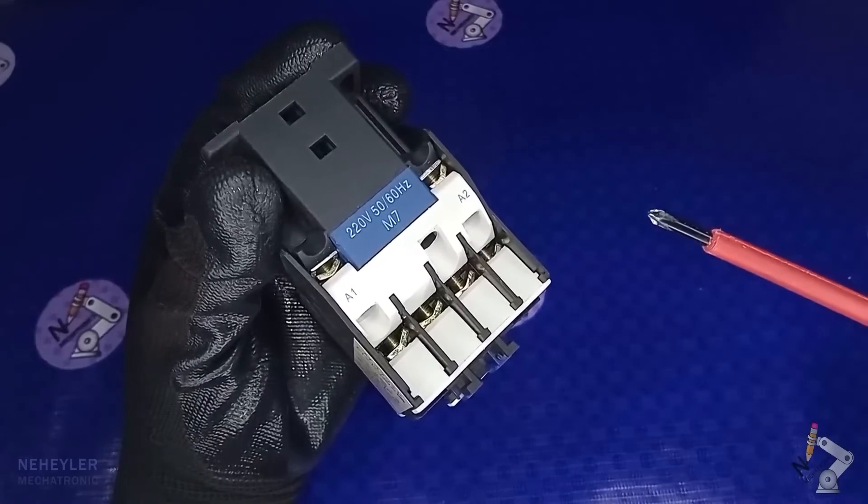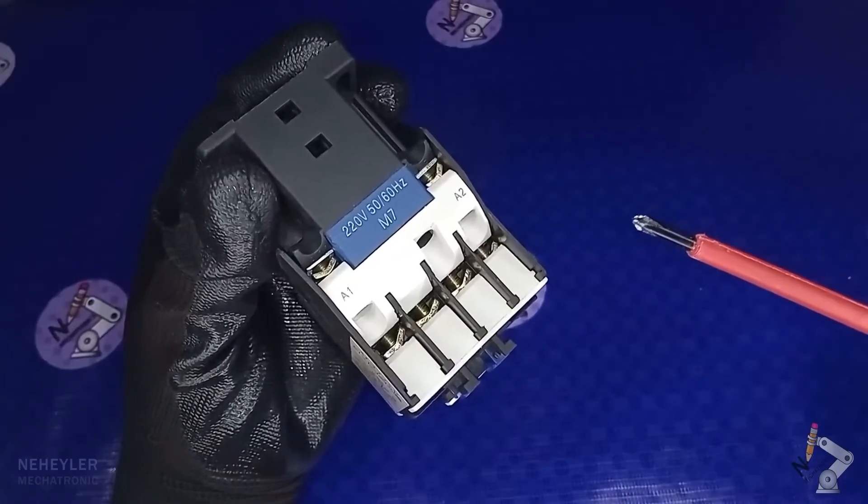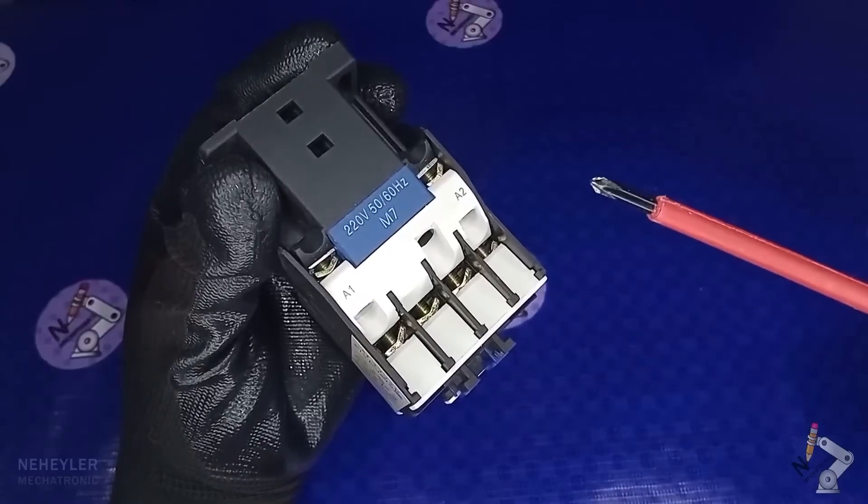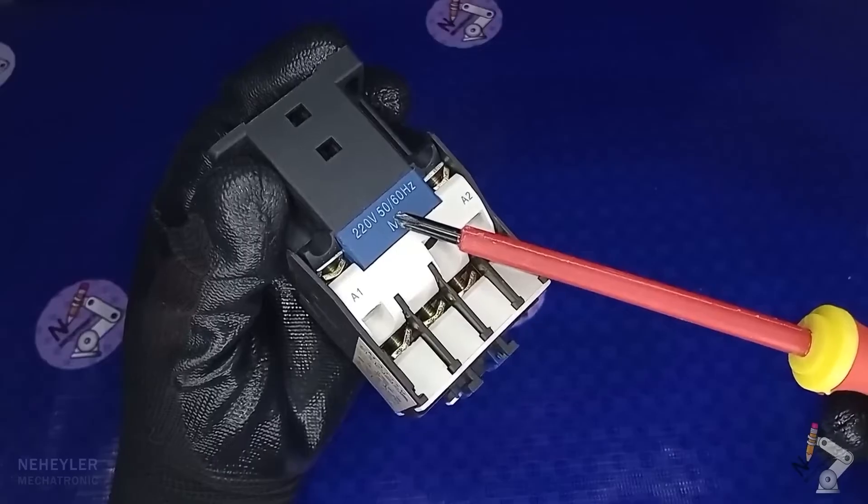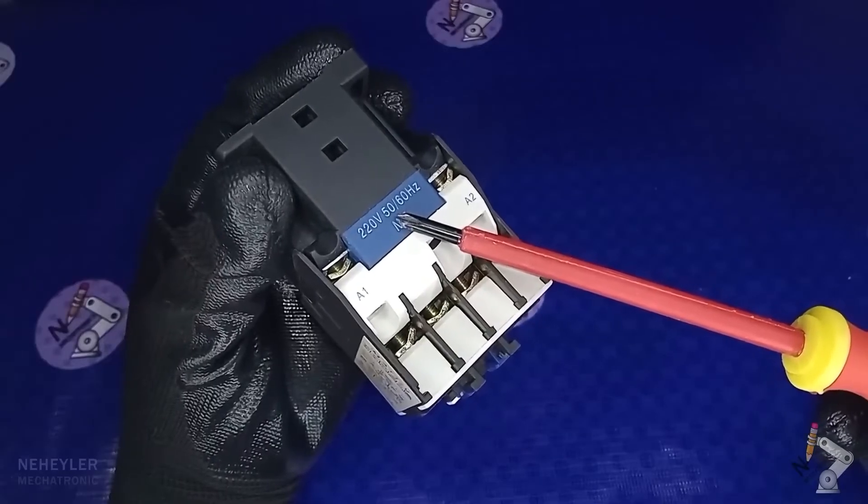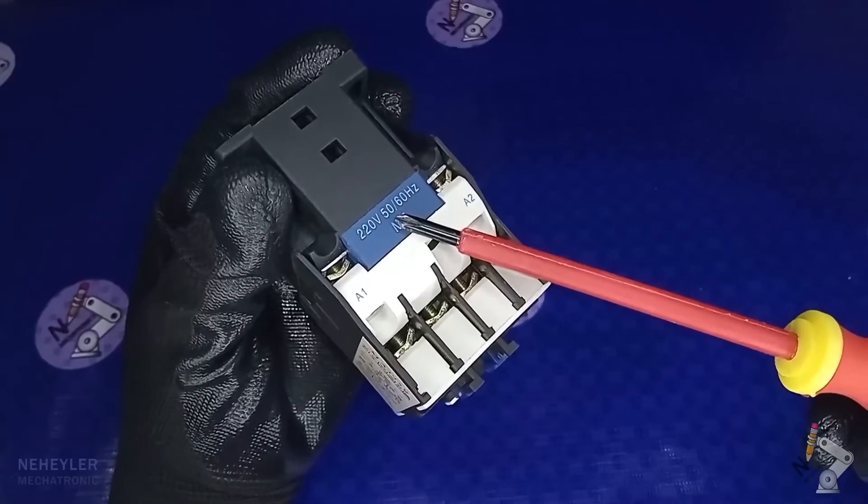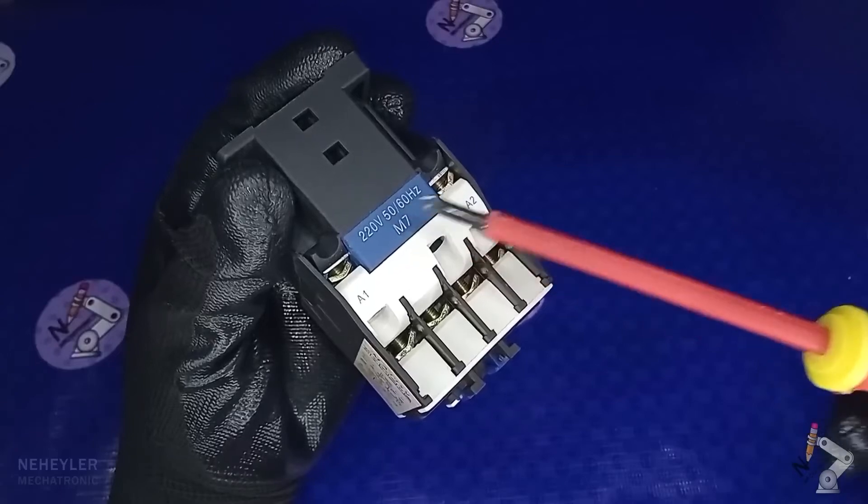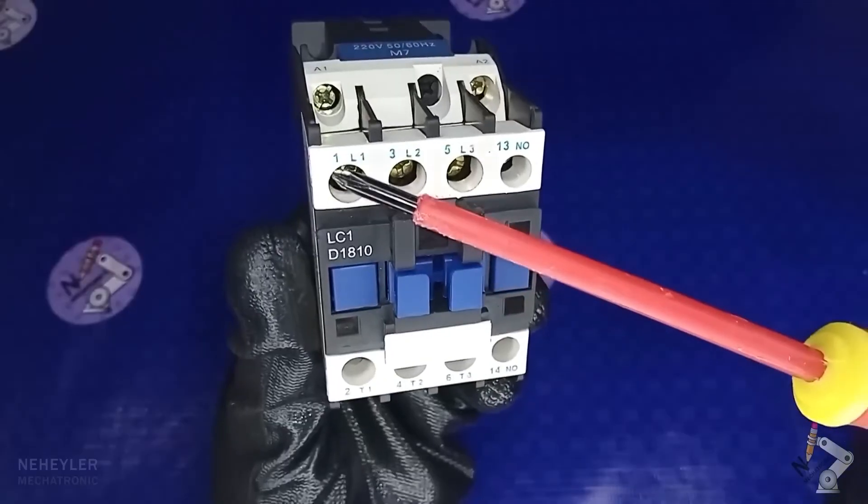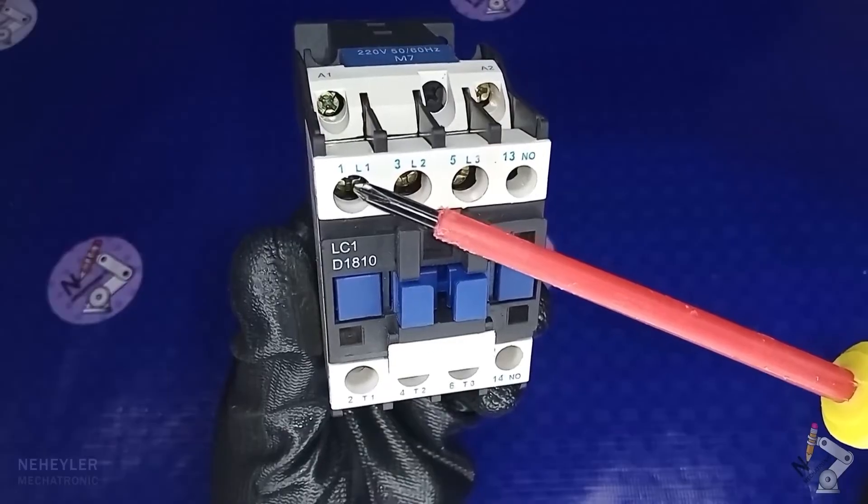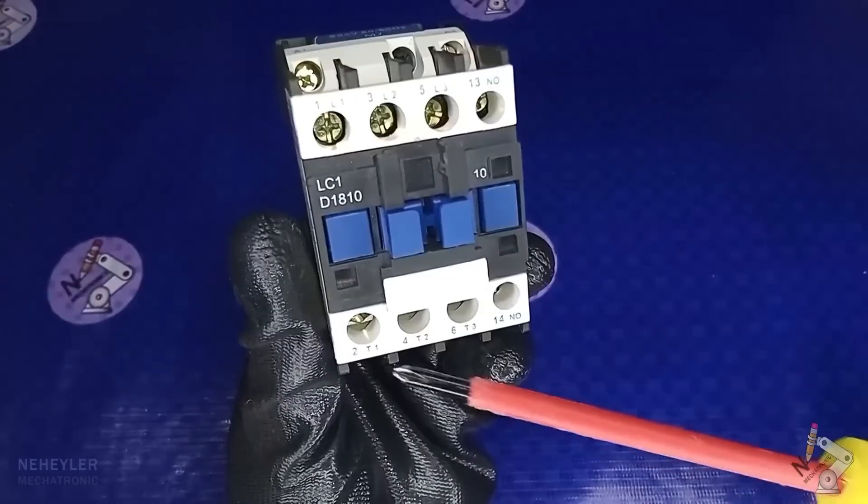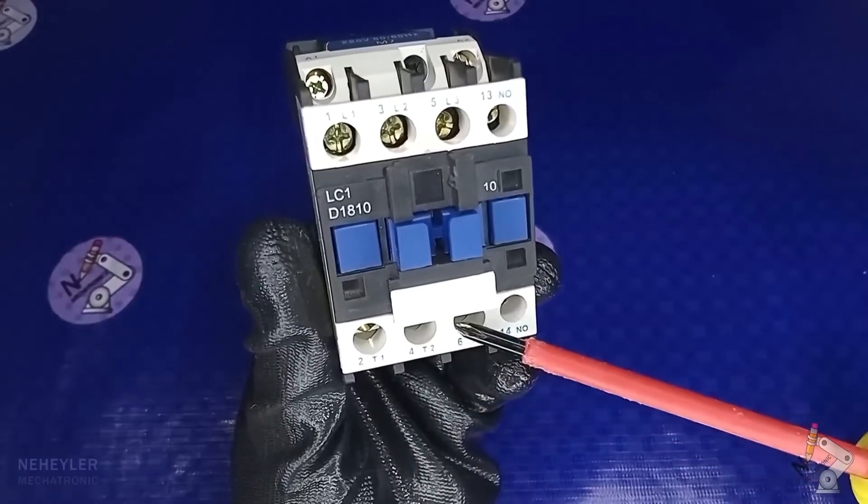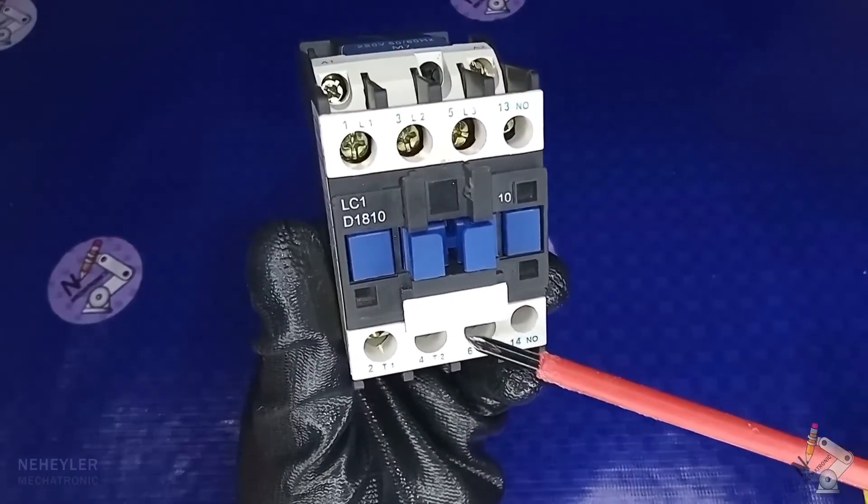That is, between A1 and A2 it must be connected to 220 volts alternating current. In other cases, the coil is powered with 24 volts, 110 volts or any other voltage which will be specified on the device and must be taken into account. On the front we have the main contacts, L1, L2 and L3, which are the input lines. And T1, T2 and T3, which are the work outputs.